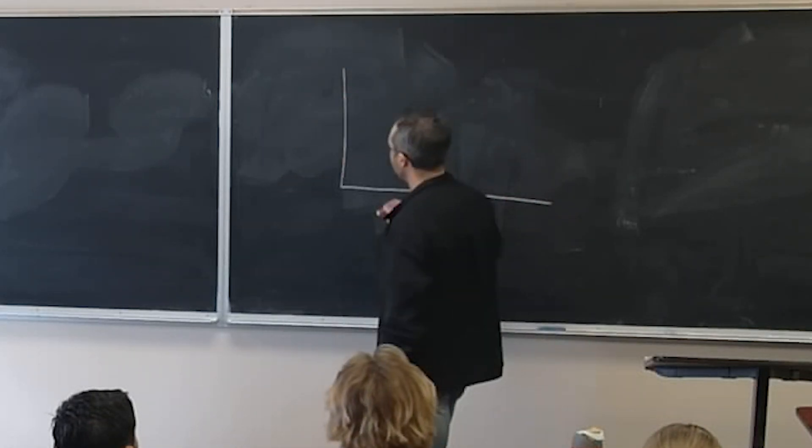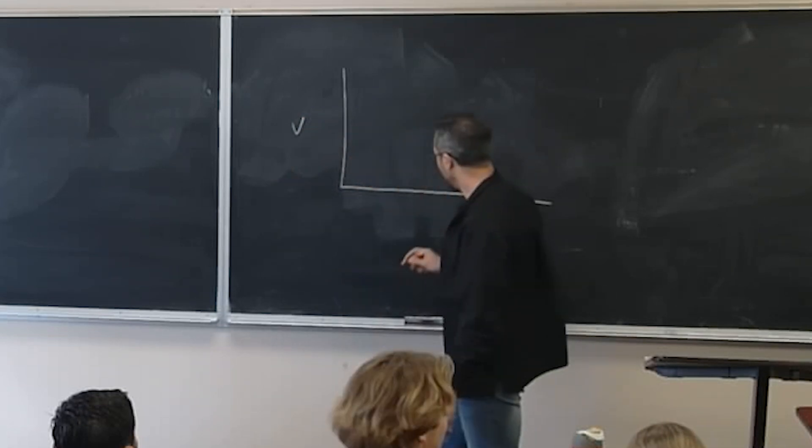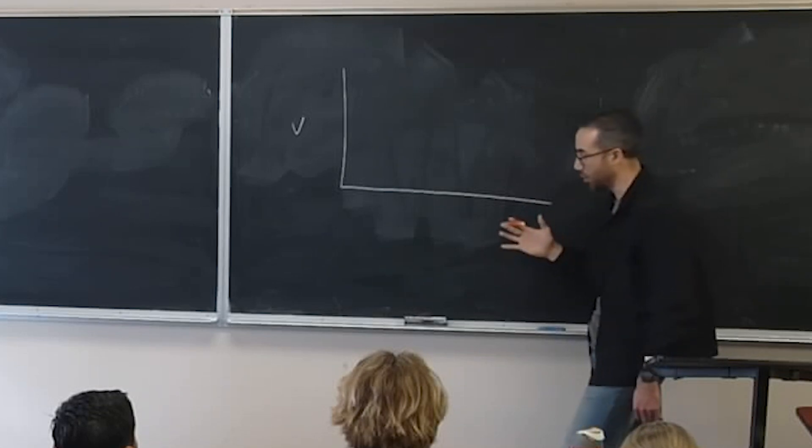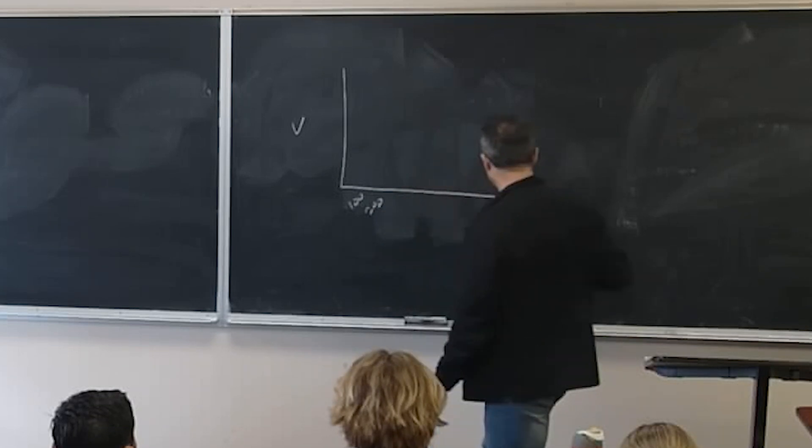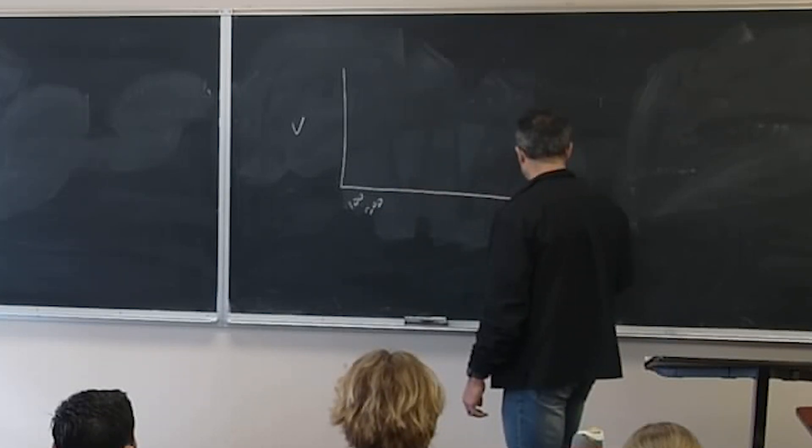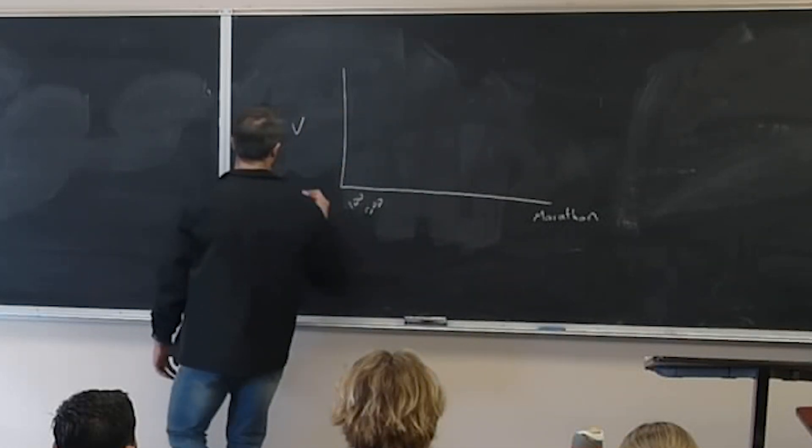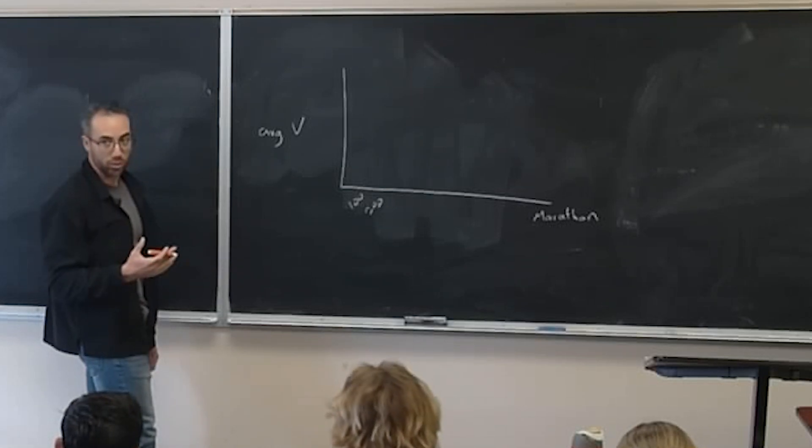Okay, so on this graph we are going to have velocity on this axis, and over here we are going to have various lengths of track events. Okay, we're going to start with the 100 meter, and then 200, and then we're going to go all the way up to the marathon, and we're going to fill in, in between, what we think the average velocity was for each of these events for the current world records.